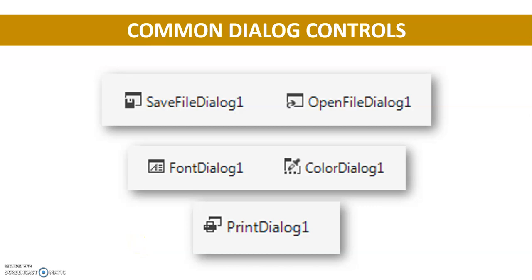Today we will talk about common dialog controls — what they are and how to use them. There are five types: save dialog, open file dialog, font dialog, color dialog, and print dialog. Let's see what these dialog boxes are and how to use them.